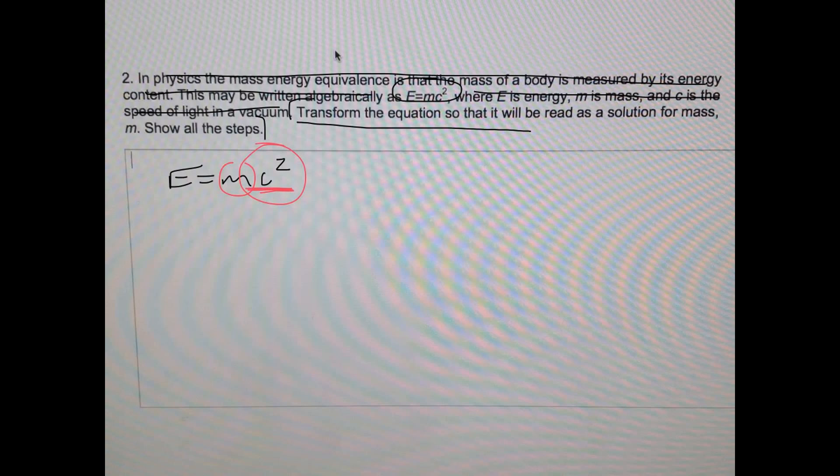Now we got to look at what's happening between m and c squared - they're being multiplied, right? So we got to do the opposite of multiplication, which is division. So we divide both sides by c squared.